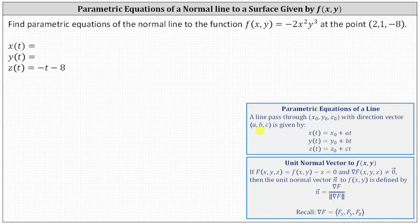We know the point (2, 1, -8) is the point (x₀, y₀, z₀), and the direction vector is going to be a normal vector to the surface at the point (2, 1, -8).